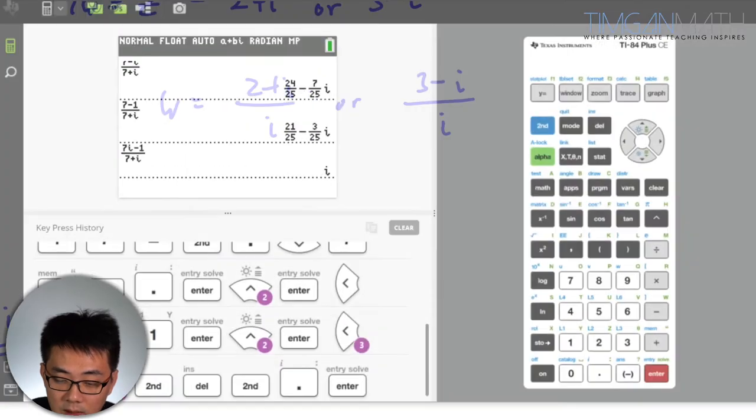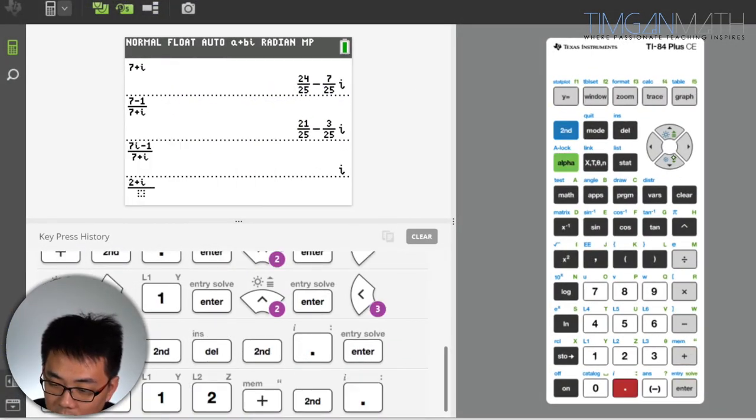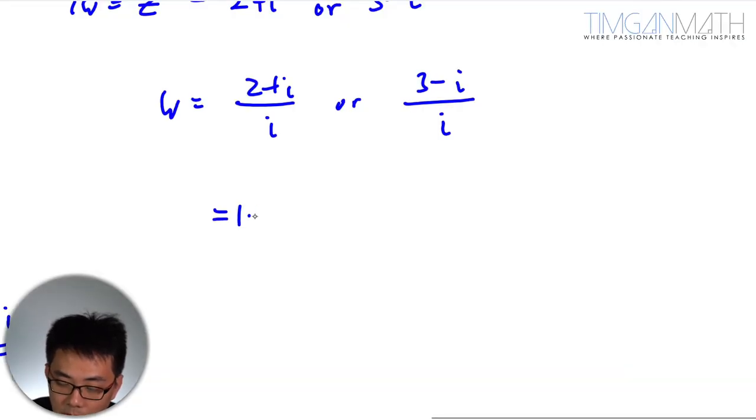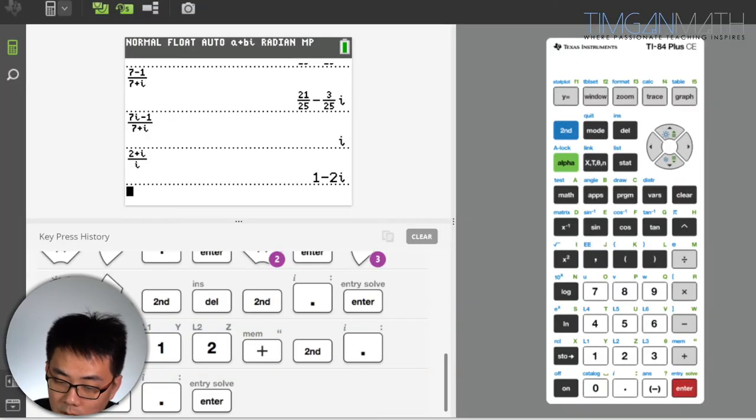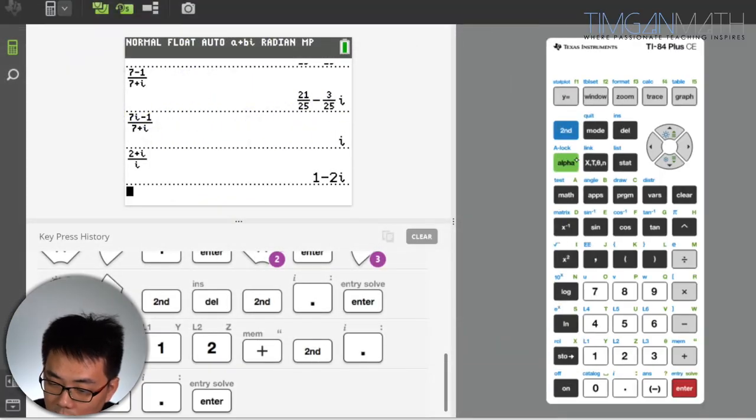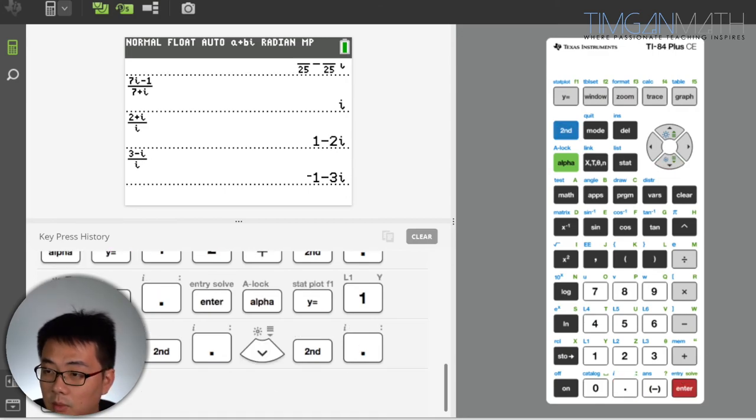Okay, this one you could just king calculator. Same thing, 2 plus i divided by i, 1 minus 2i. Or let me just put what is it, 3 minus i, is it? 3 minus i divided by i, minus 1 minus 3i.